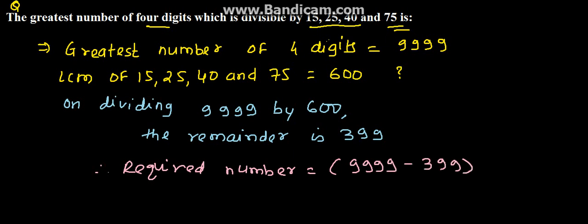Therefore we can say that 9600 is the solution of the given problem. It is the greatest four-digit number which is divisible by these four numbers, which is the solution for the given problem. Thank you.